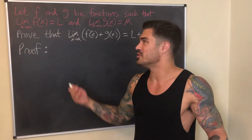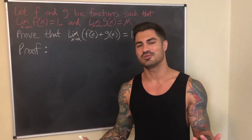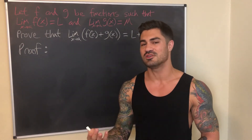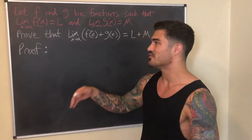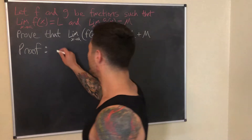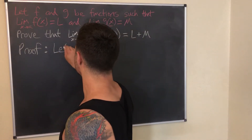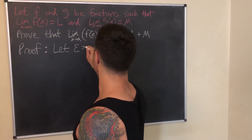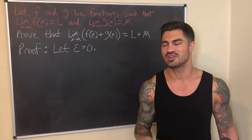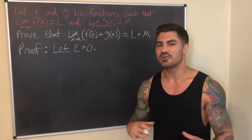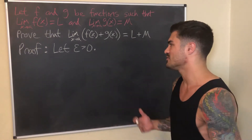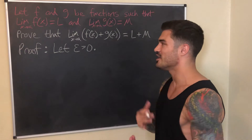How do we start? We think back to the definition of a limit. What does it mean for this limit to exist and equal L? It means for any Epsilon greater than zero, there exists a Delta greater than zero such that if zero is less than |x − a| < Delta, then |f(x) − L| < Epsilon. So we let Epsilon be an arbitrary number greater than zero — that's how we start pretty much any Delta-Epsilon proof.